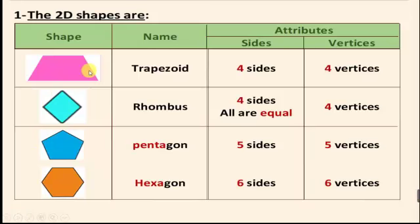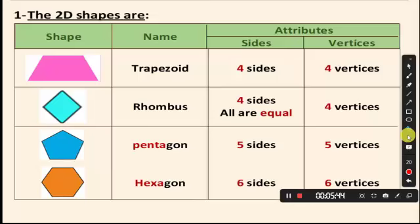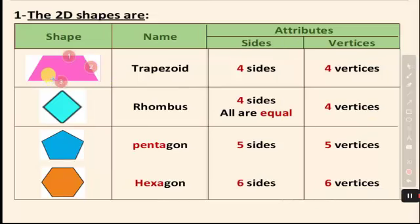This shape is the trapezoid. Let's count the sides: one, two, three, four — I have four sides and four vertices. But the sides are not all equal; they are not equal sides.